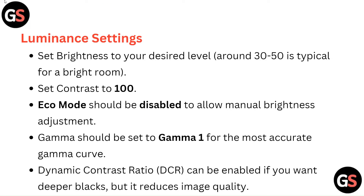Luminance settings. Set brightness to your desired level — around 30 to 50 is typical for a bright room. Set contrast to 100. Eco mode should be disabled to allow manual brightness adjustment.